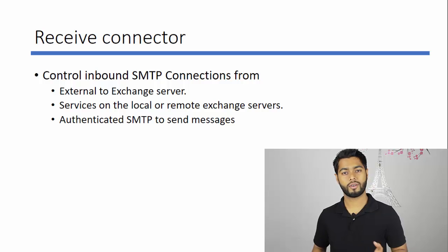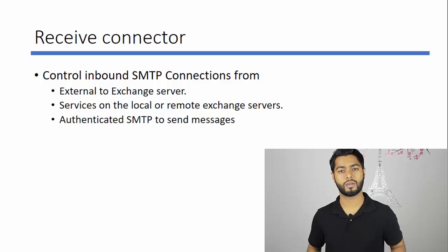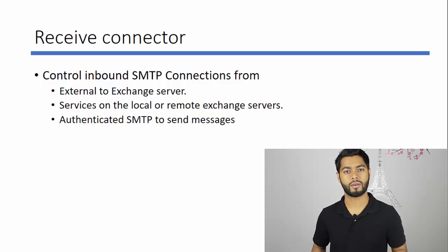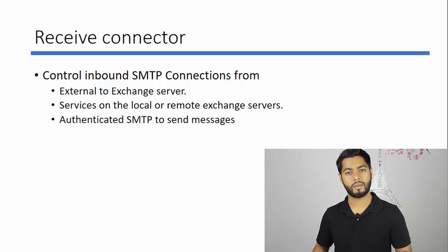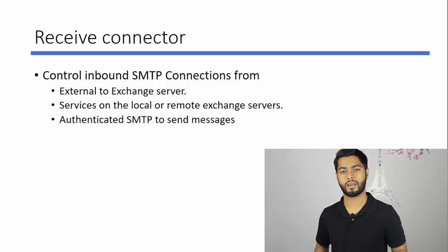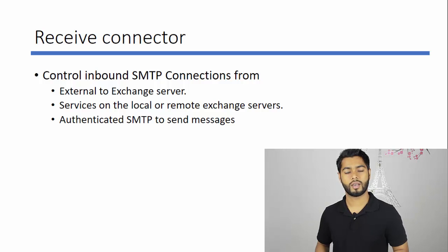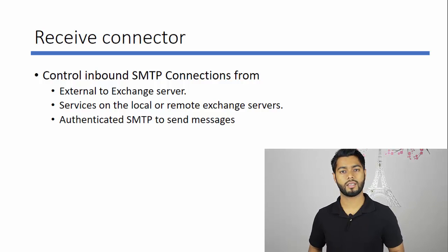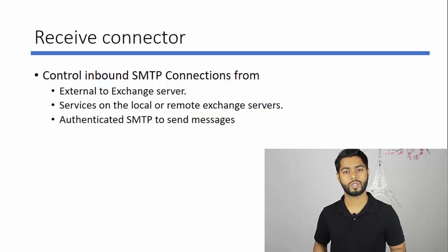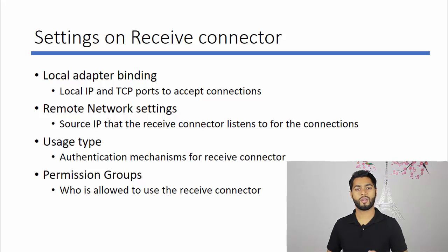Exchange Server receives different types of SMTP connections. It receives connections from external channel servers, from Exchange servers in the same organization, and also from printers or scanners to send authenticated SMTP messages. There are different types of connections that come into Exchange, and a receive connector is the one which controls this inbound SMTP connection in an Exchange Server.